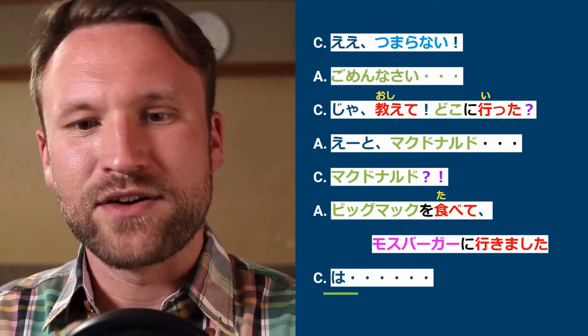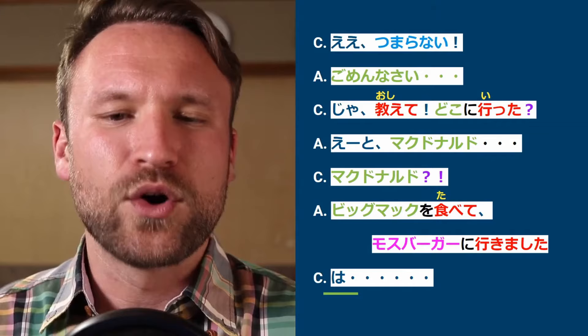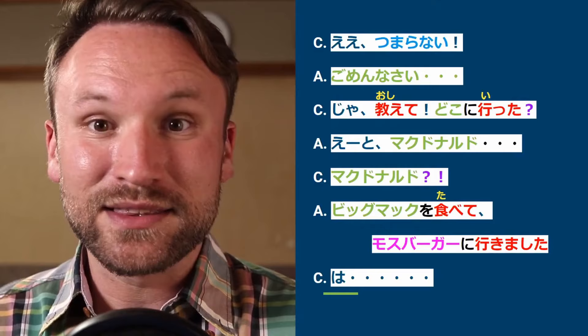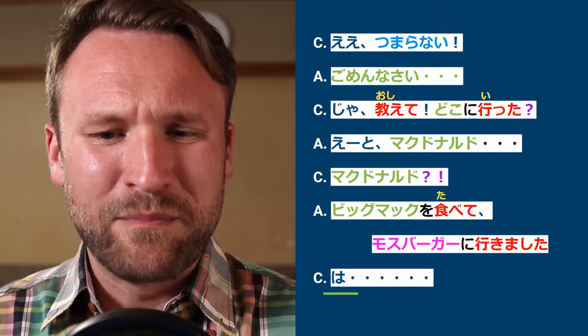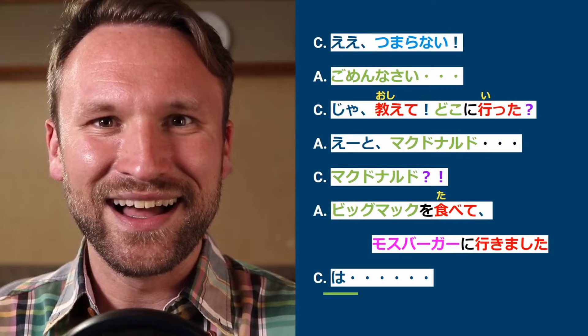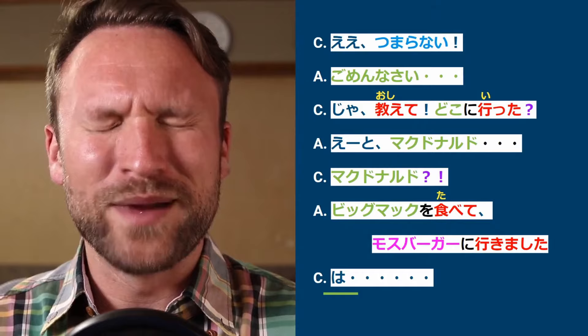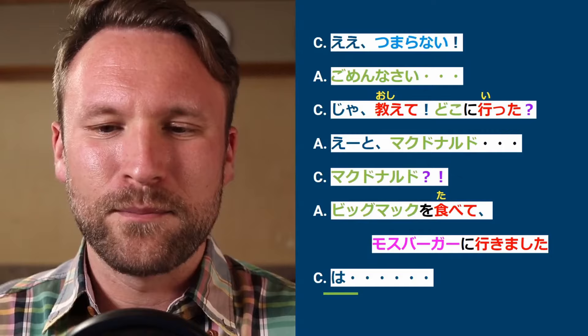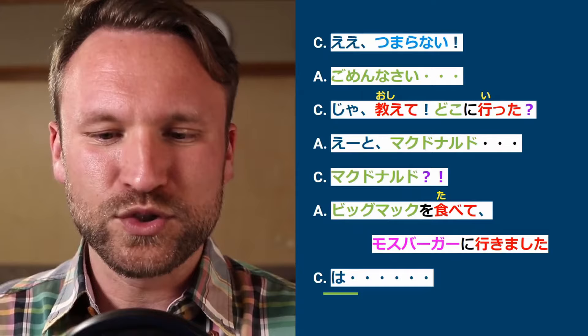The dialogue continues with C harassing A. C: Oshiete! Doko ni itta? A: Makudonarudo. C: Makudonarudo? A: Biggu Makku wo tabete, Mosubaagaa ni ikimashita. C: E? In English: 'Tell me! Where did you go?' 'McDonald's.' 'McDonald's?' 'We ate a Big Mac and went to Moss Burger.' The final verb ikimashita is past tense, telling us the tense for the whole sequence. Moss Burger is another burger chain in Japan, famous for rice burgers.